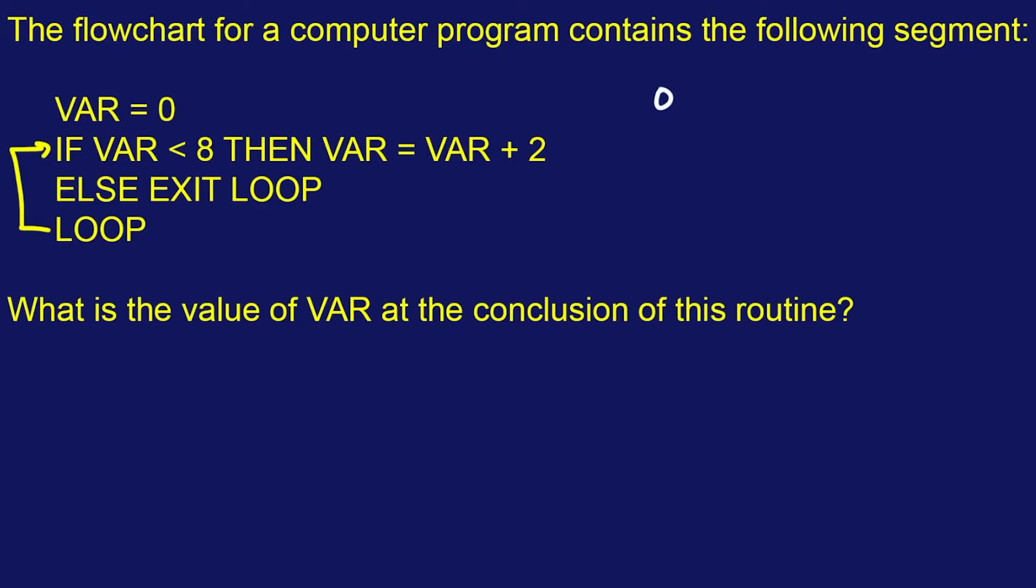It says if the var is less than 8, then var equals var plus 2. Now, that may be algebraically incongruent nonsense, but what this is saying, we're going to replace the variable after we add a 2 to it, if it's less than 8. So the var is 0 currently, and we're going to add 2 to it because it's less than 8. So we're going to get that to 2.